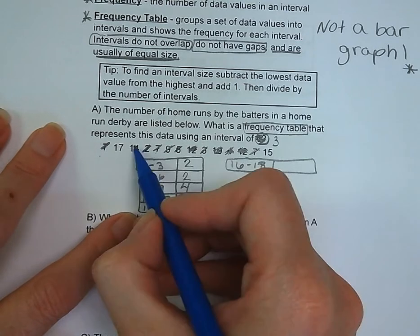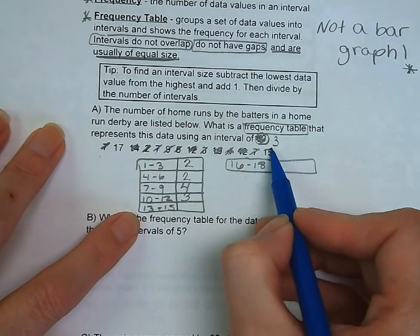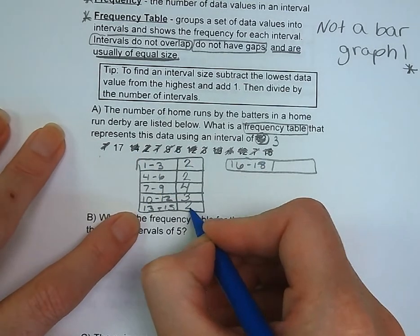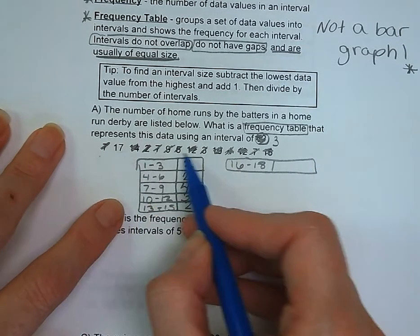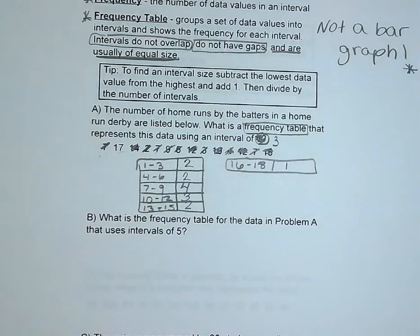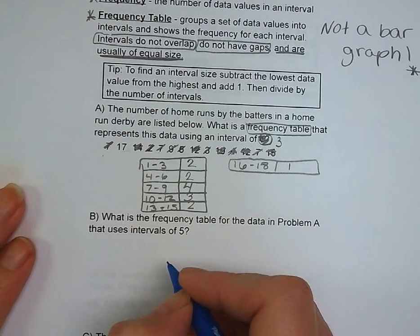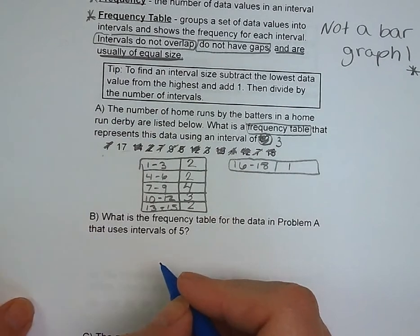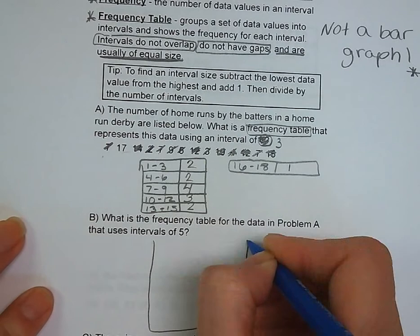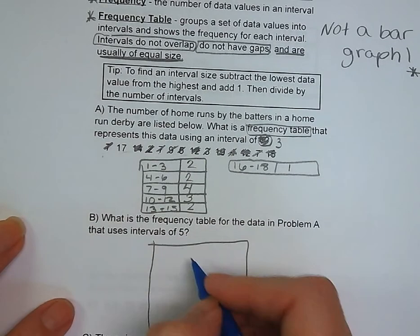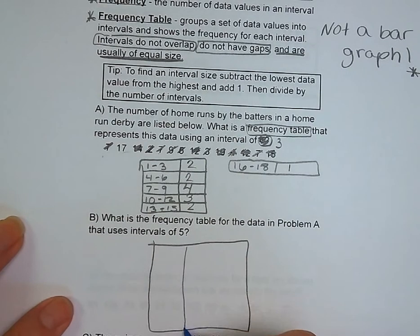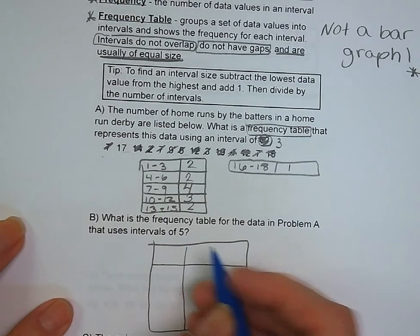10 to 12, we've got a 12, a 10, and another 12, so that's 3. 13 to 15, we've got 14 and 15, so that is 2 data points. And 16 to 18, we've got 1. As you can see, our intervals did not overlap. No data point would fall into two different boxes, and there are no gaps. Even if you didn't have a data point, you would just put a 0, and they are equal-sized intervals.